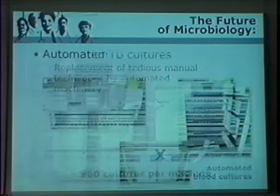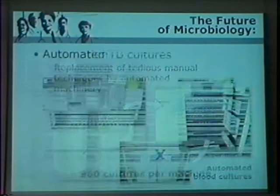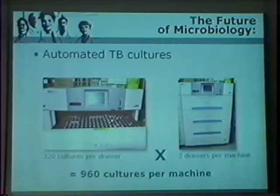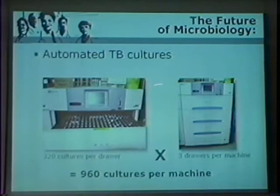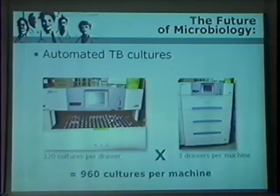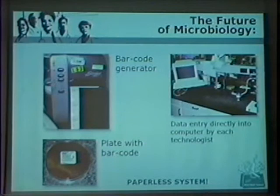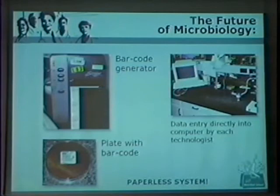Blood cultures is one area we've tried to completely automate. We used to take blood and manually put samples on agar plates — very tedious and time consuming. Now we have a machine where every 10 minutes a scanner reads a special substance on the bottom of the tube that tells us whether bacteria are growing. It's instantly interfaced with the computer, and as soon as a blood culture becomes positive, the computer rings an alarm. The technician goes over and we call the doctor to tell them there's bacteria in the bloodstream. Our lab is automated with barcodes — completely paperless, everything entered directly into the computer.